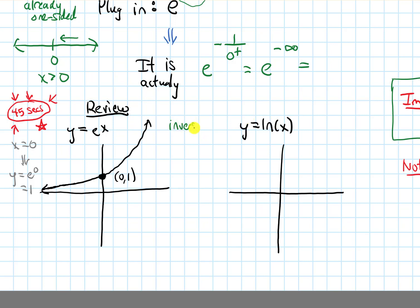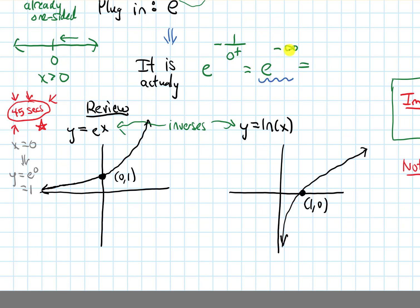Y equals ln of x is the inverse of e to the x. As inverses, the x and y values get switched, so the graph of ln of x crosses the x-axis at one comma zero. It has a vertical asymptote at the y-axis and curves upward. Now, e to the negative infinity means we let x go to negative infinity on the graph of e to the x — way over to the left — and there the outputs get super close to zero. So e to the negative infinity equals zero, and that is our answer.